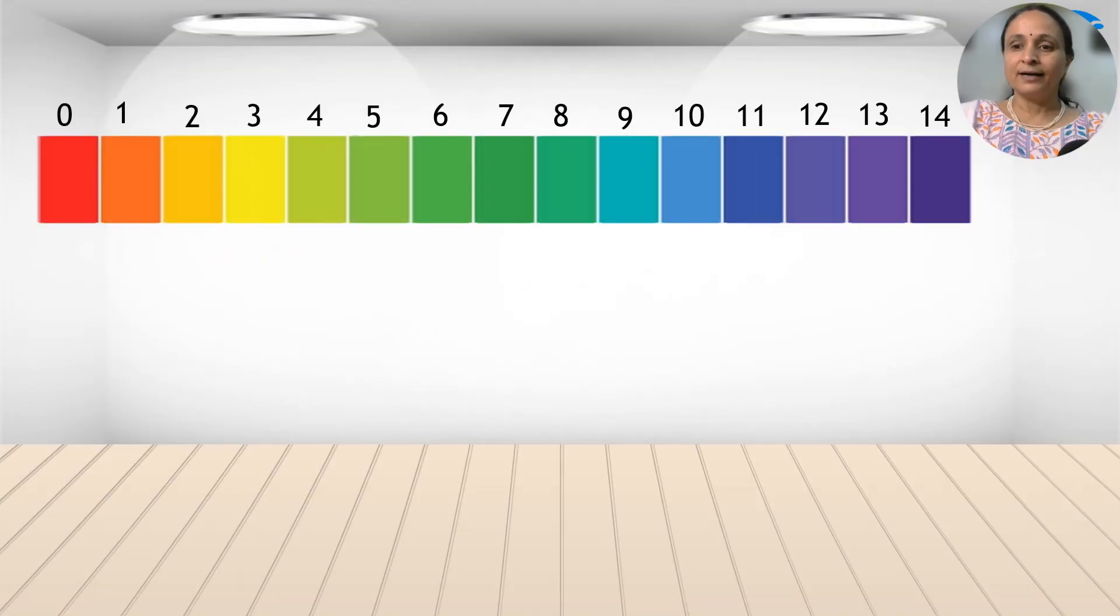This is how the universal indicator looks. This universal indicator is made up of many organic indicators as well as laboratory indicators. And the color on the pH scale will tell you how much is the pH of the solution whichever you take it. How do you do it? You dip the universal paper in the solution and compare it with all these colors. You will get the exact pH of the solution which we have.